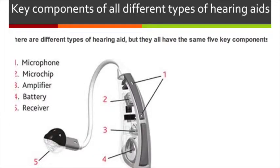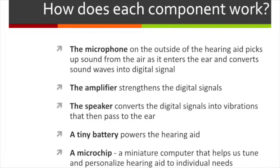Now let's talk about how hearing aids work. Hearing aids have five key components: microphone, microchip, amplifier, battery, and receiver. First, the microphone, located on the outside of the ear, picks up sound waves and converts them into digital signals. The amplifier then strengthens the digital signal and passes it to the speaker, which converts the digital signal back into vibration and passes it to the ear. There is also a microchip located in the hearing aids which helps patients personalize the device to individual needs.